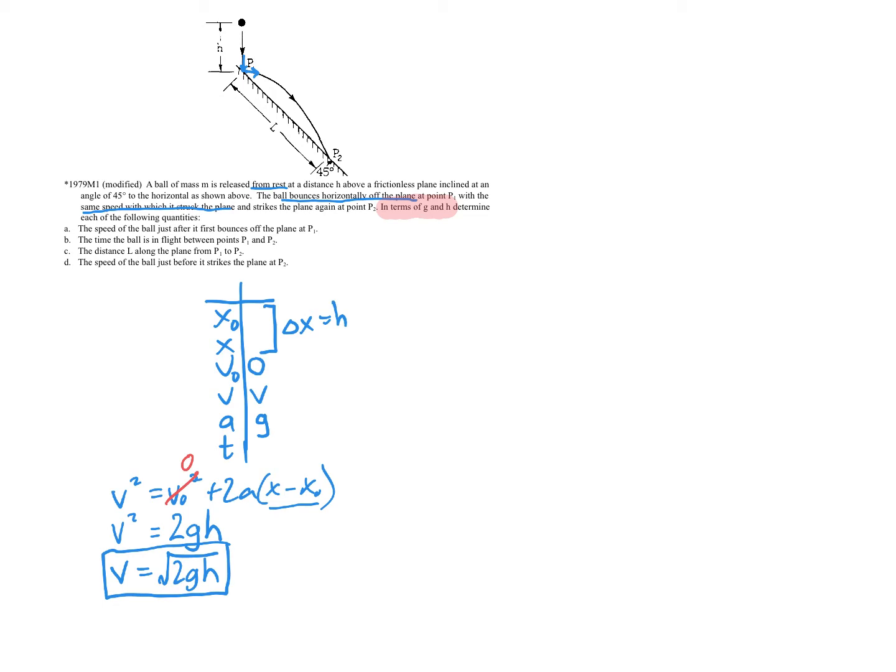The next part, Part B, asks for the time that the ball is in flight. So now we're not looking at the drop anymore. We're looking at the point in time when it's flying over here. And so we want the time that it takes to do that. You should recognize that as being projectile motion, so we have both horizontal and vertical going on here. So let's write out what we've got. We've got an X naught, an X, a V naught, a V, an A, and a T.